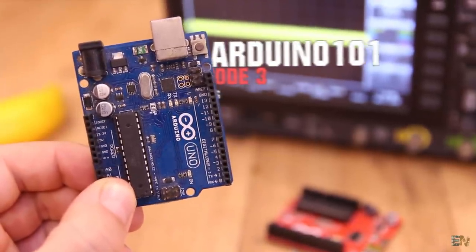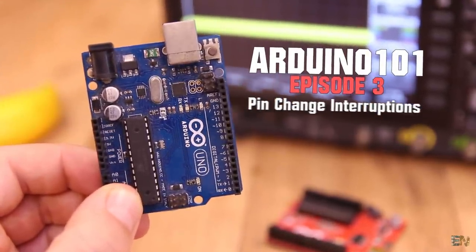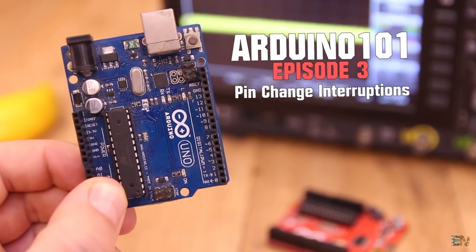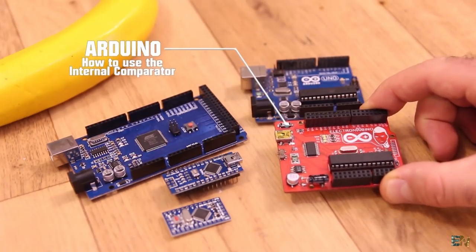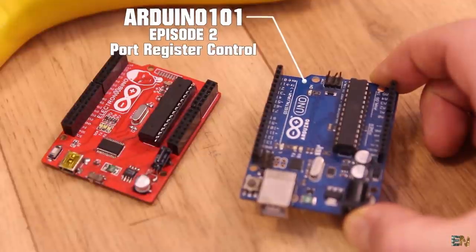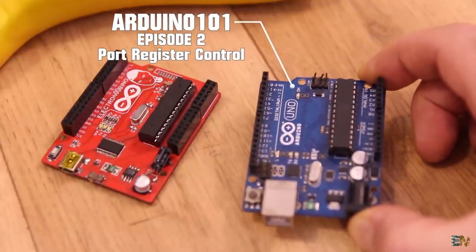Today we have another Arduino 101 tutorial. In the previous two videos we have seen how to control the internal comparator and how to control the output and input pins using registers for more speed and better code.